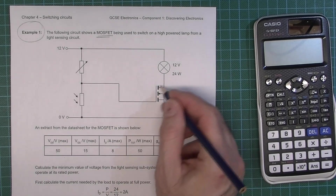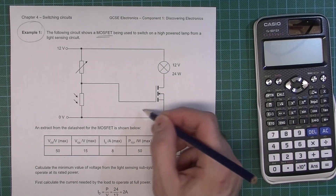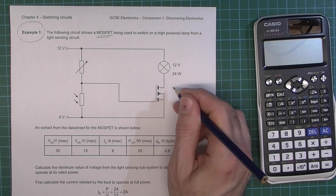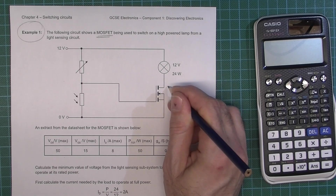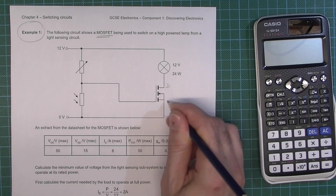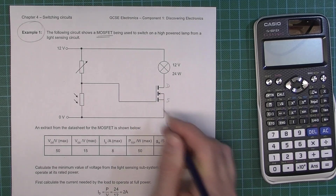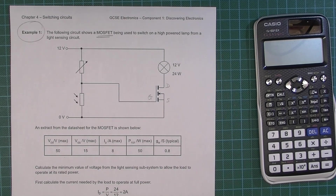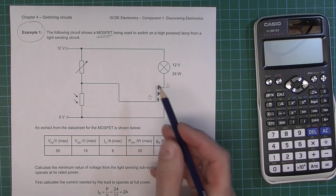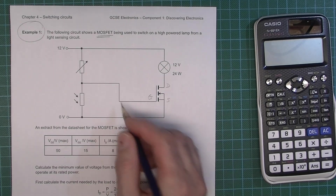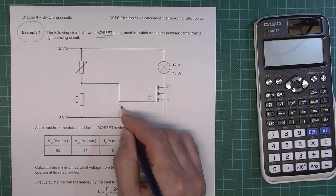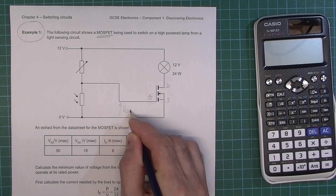There are three pins on this MOSFET and we're going to call them drain, source, and gate. The voltage in here we could call VIN, but I'm going to call it VGS.